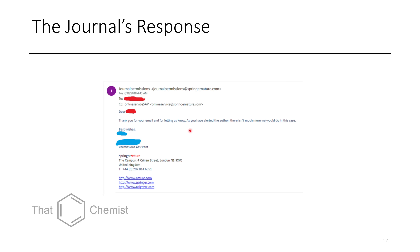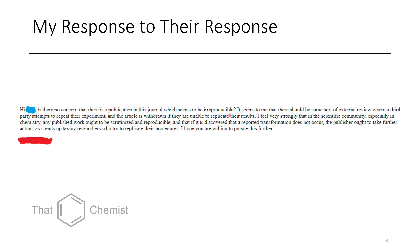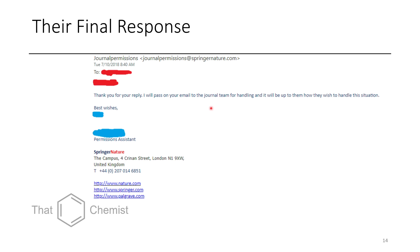The journal responded saying only that since I had already alerted the author, there wasn't anything else they would do. I pushed back — their reputation is on the line, the data is definitively falsified, they had one example with any data in the whole paper and they falsified it poorly at every level. They then said they'd pass it to the journal team for handling, and never emailed me again. This is how much publishers care about fake science. If you go online now, you can still access or pay for that article, and this is the state of science even in 2022.